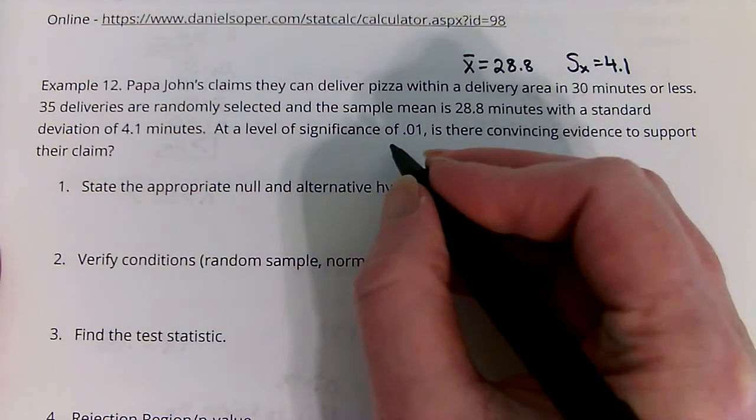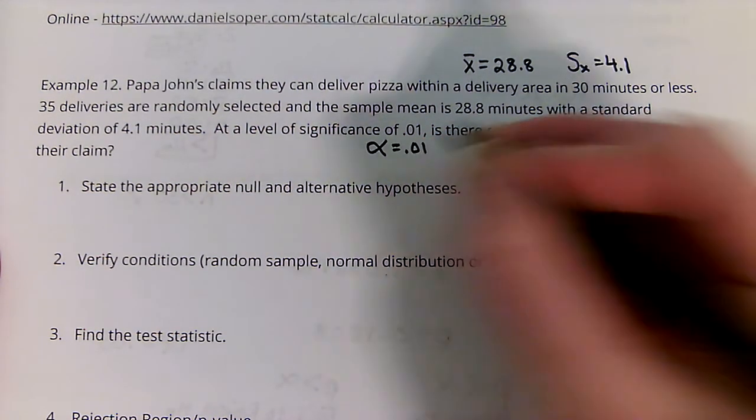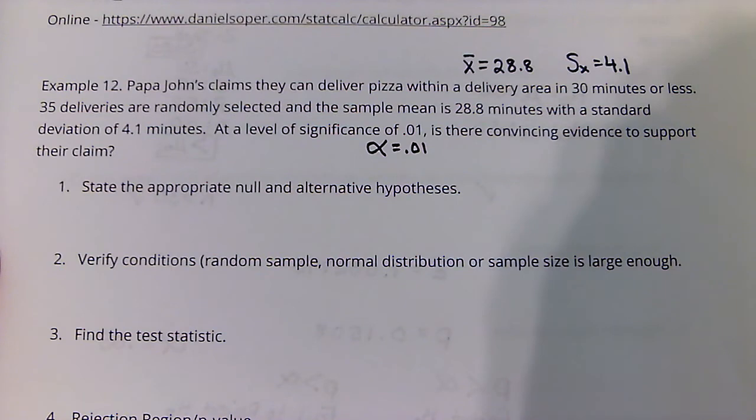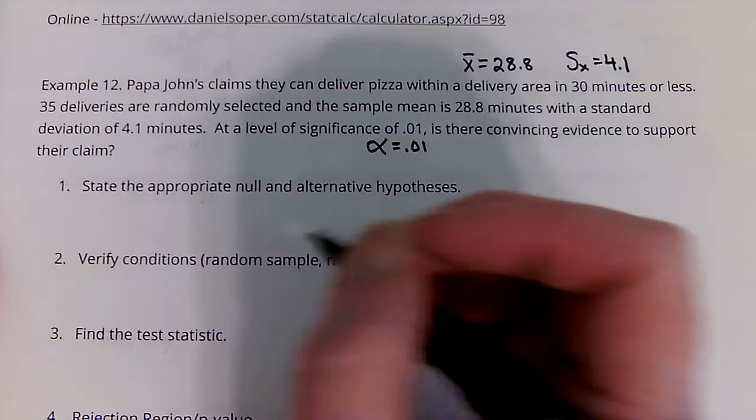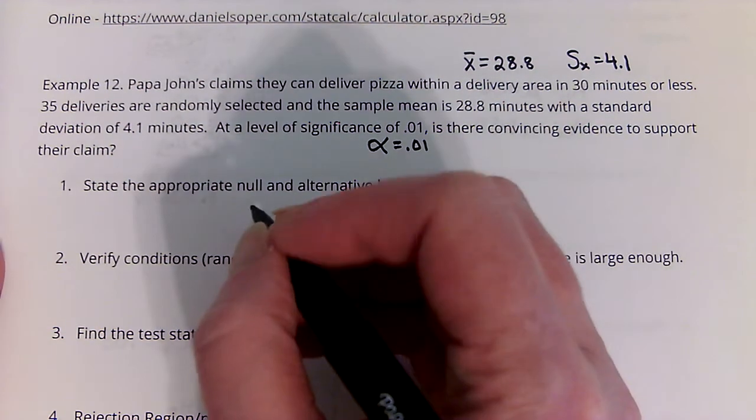At a level of significance of 0.01, is there convincing evidence to support their claim? So first off, let's talk about the null and alternative hypothesis.